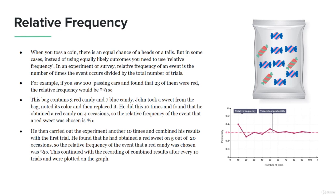He then carried out the experiment another 10 times and combined his results with the first trial. He found that he had obtained a red sweet 5 out of 20 occasions. So the relative frequency of the event is that a red candy was chosen 5 out of 20 times. Again, very simple elementary examples for you to understand how simple this concept is.